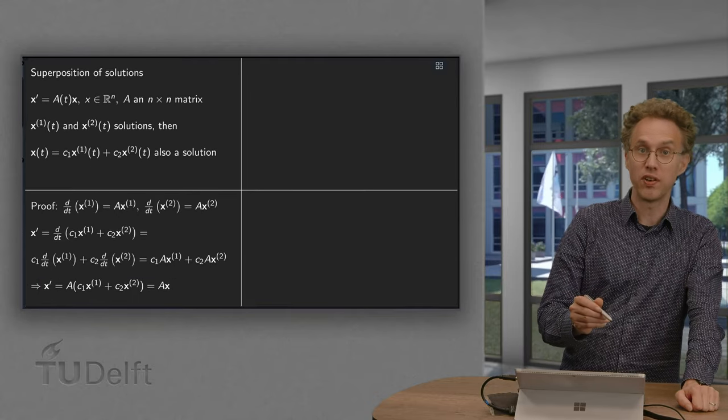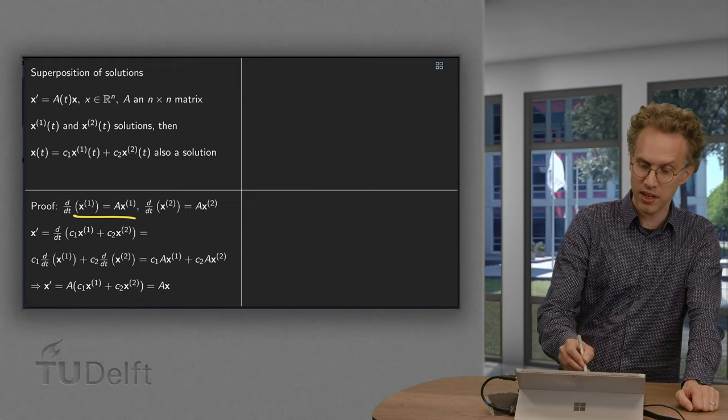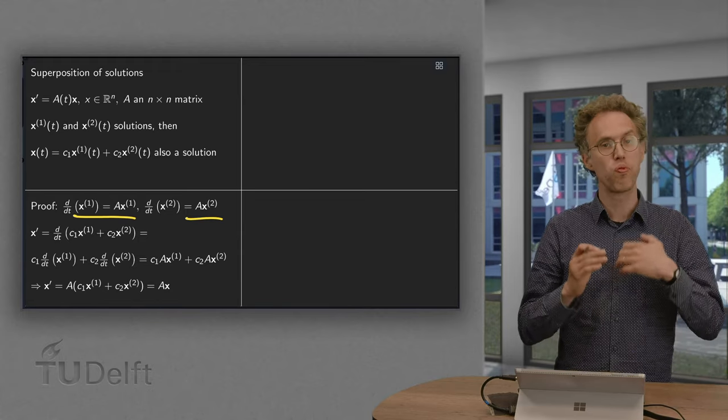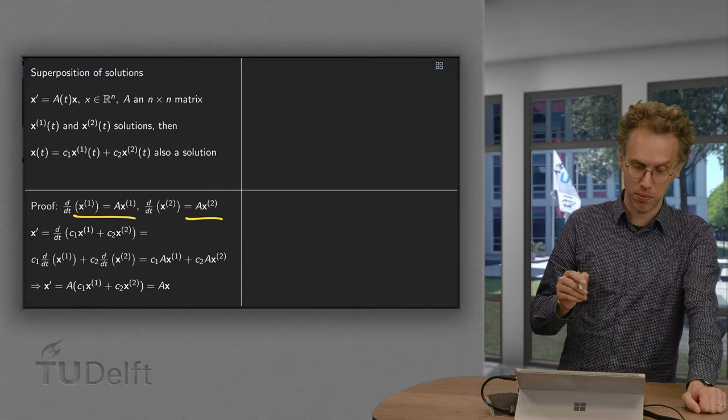Now how can we see that? Well, x1 and x2 are solutions. So x1 prime equals A times x1, and x2 prime equals A times x2. And A depends only on t, so the A is the same in both cases.